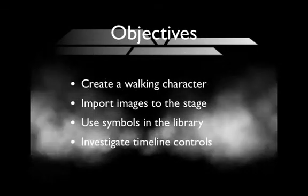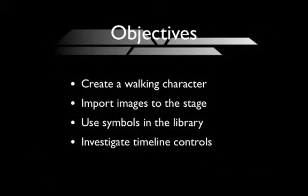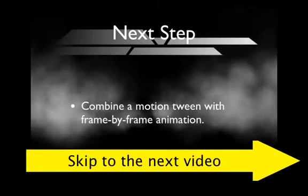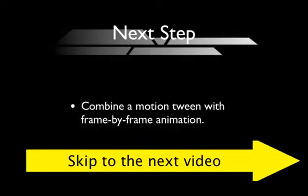In this video we created a walking character using frame-by-frame animation, imported images to the stage, used symbols in the library, and looked at several timeline controls. In the next step, clicking the link will take you to a tutorial where we combine a motion tween with frame-by-frame animation, which will help clean up the frame-by-frame and make the next step easier.